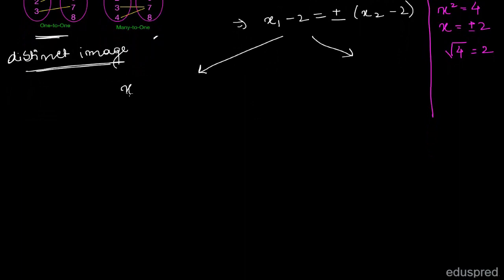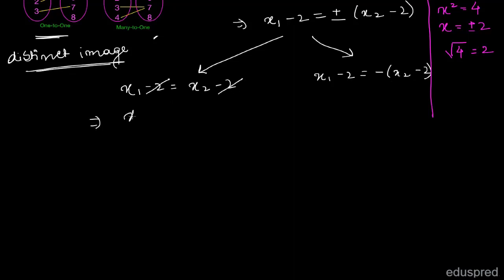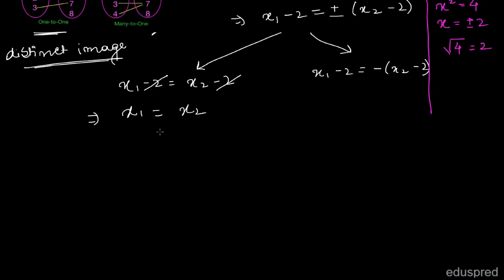There will be 2 cases. Case 1: when x1 minus 2 is equal to x2 minus 2. Solving this, the minus 2 on both sides cancels, giving us x1 is equal to x2, which is what we wanted to prove. So according to this case the function is a one-to-one function.